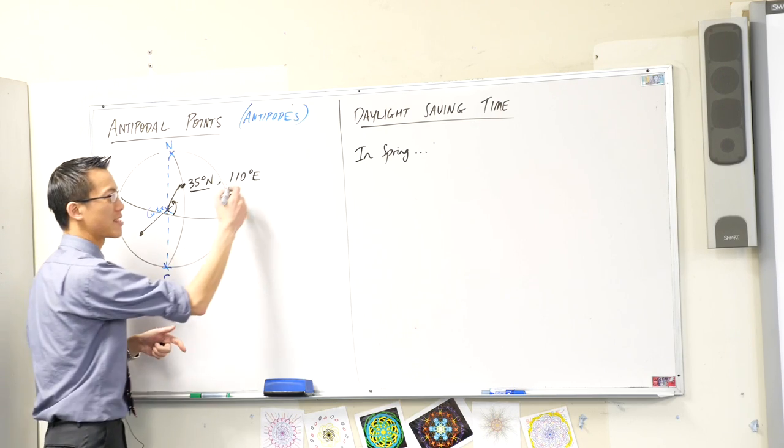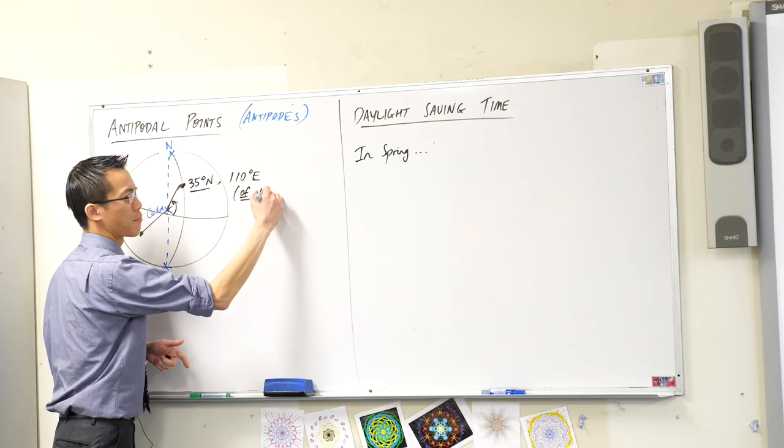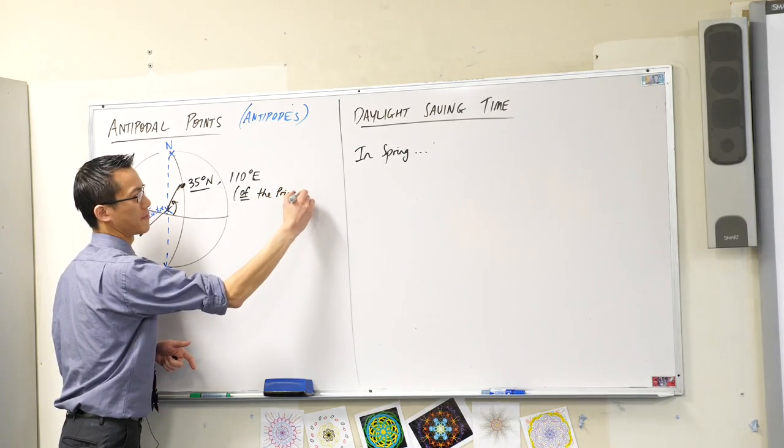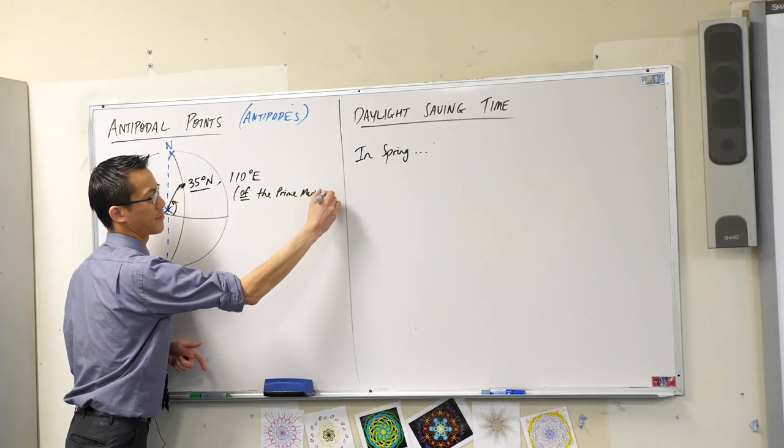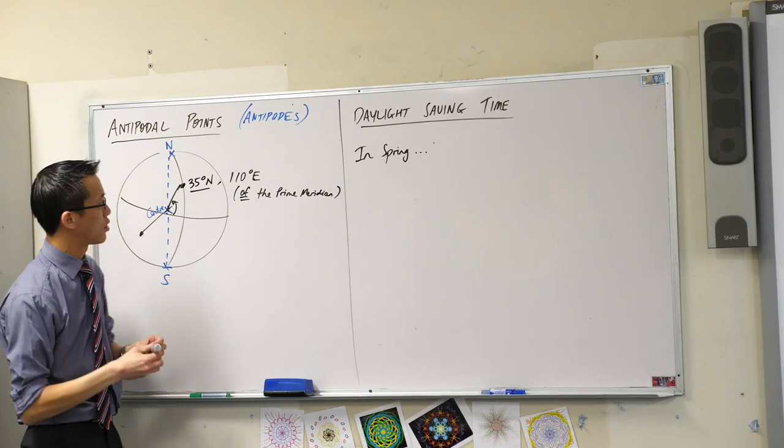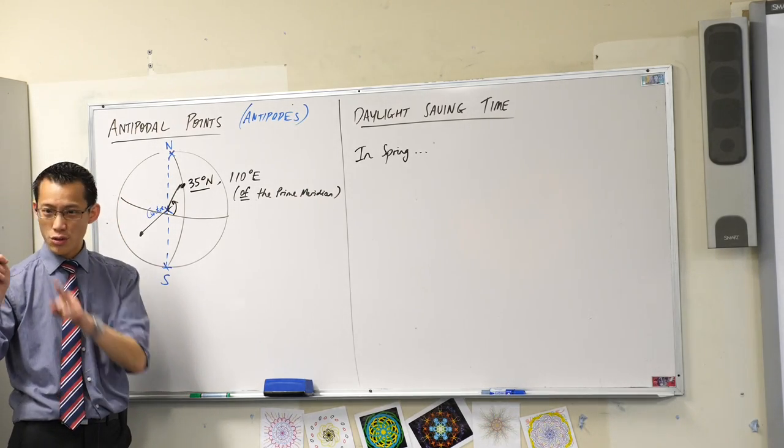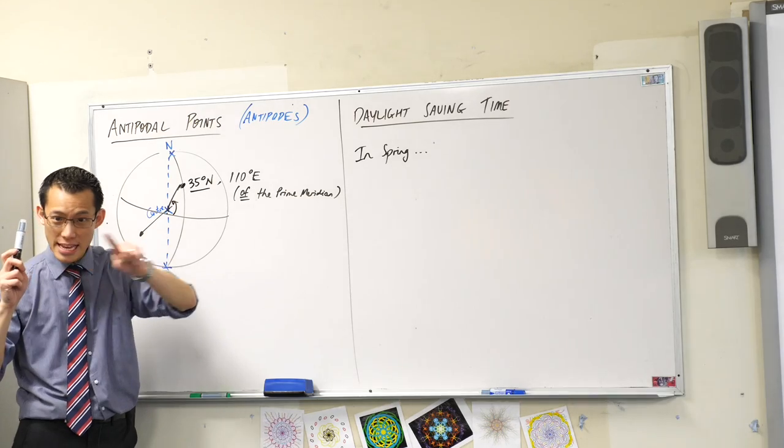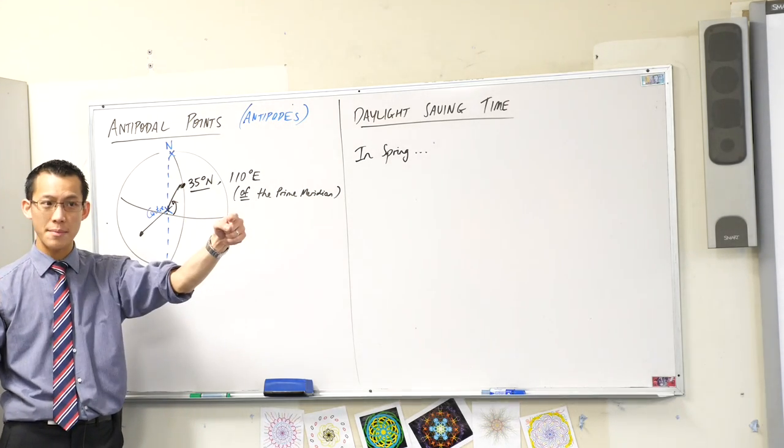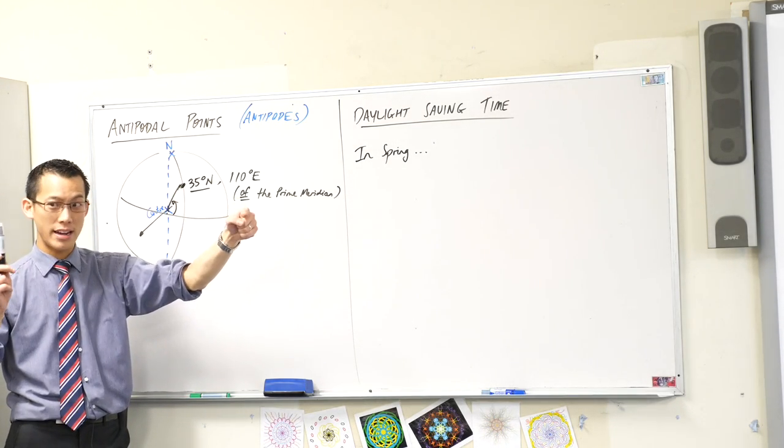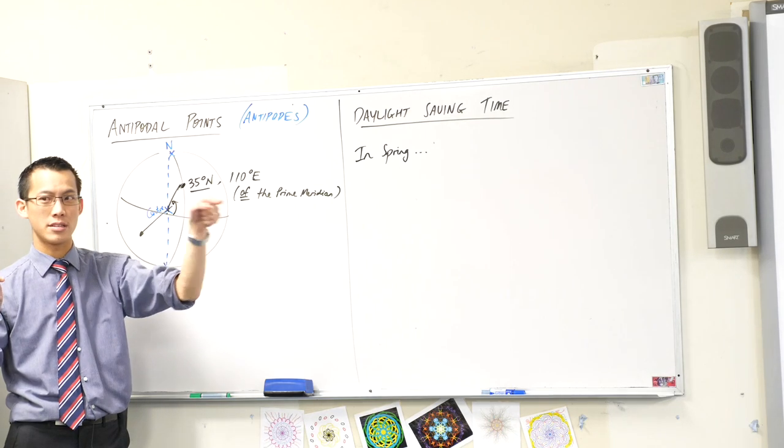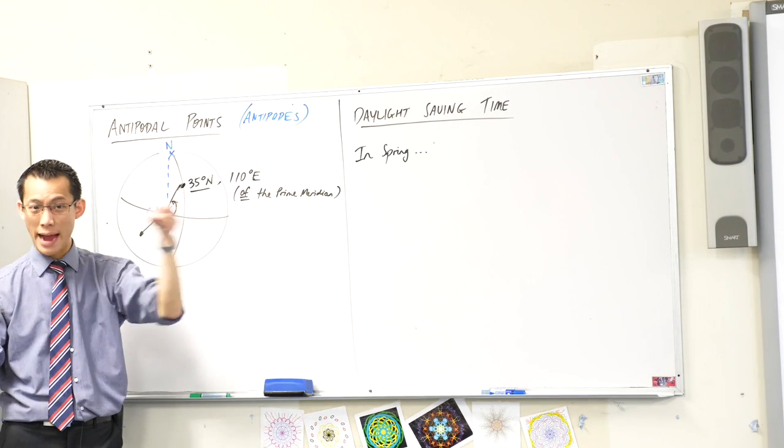So this means east of the prime meridian. Does this make sense? So here's Greenwich. You travel 110 degrees east and then you'll get to this spot. So to get back to Greenwich, you're going to have to travel 110 degrees west to come back to Greenwich.